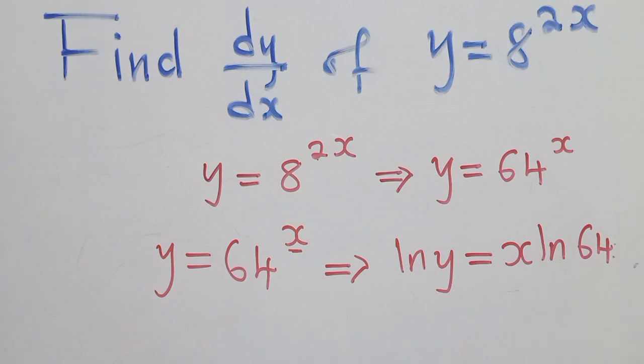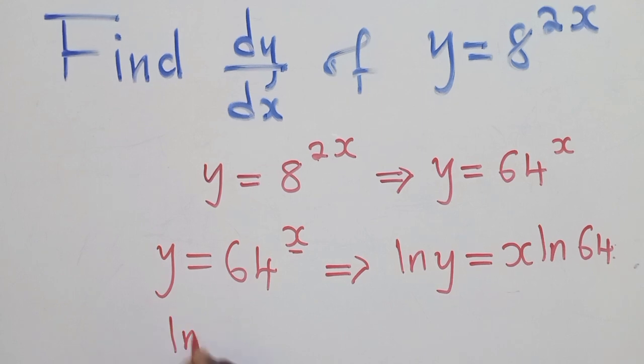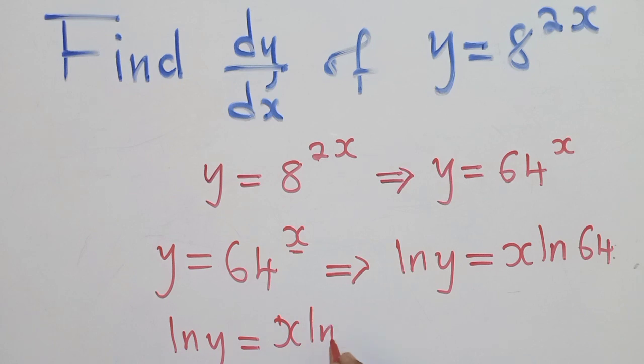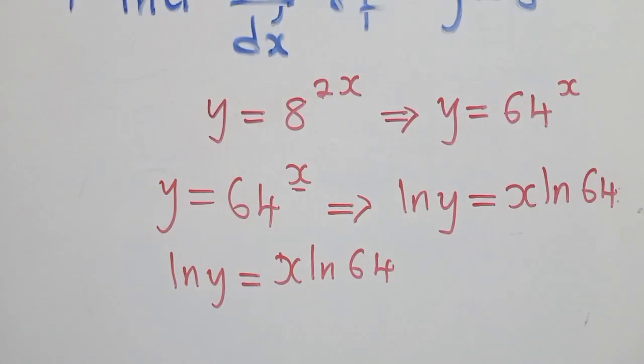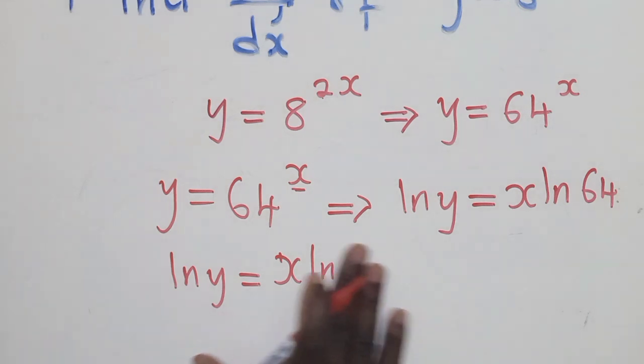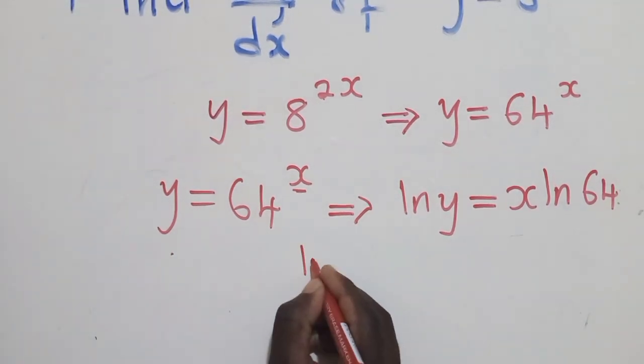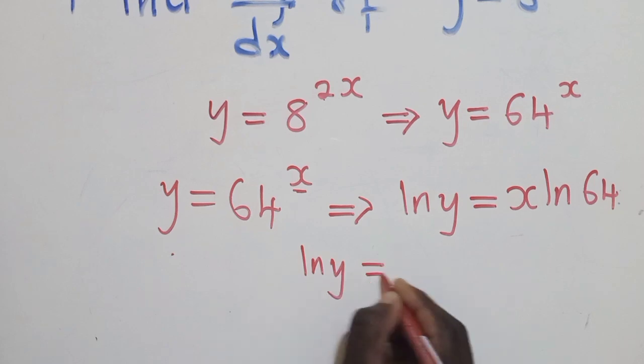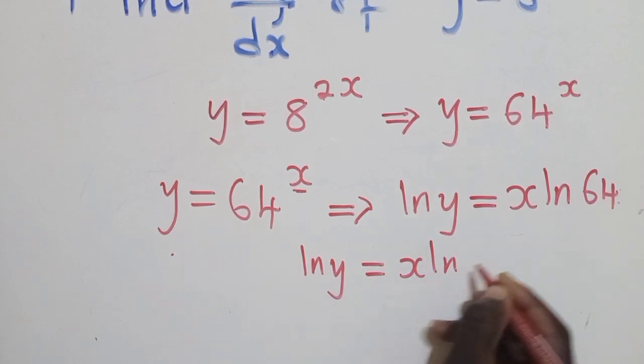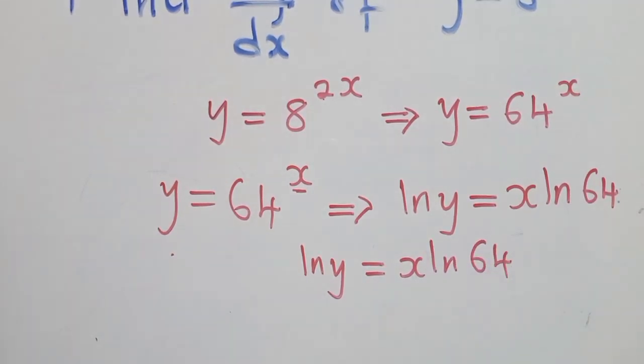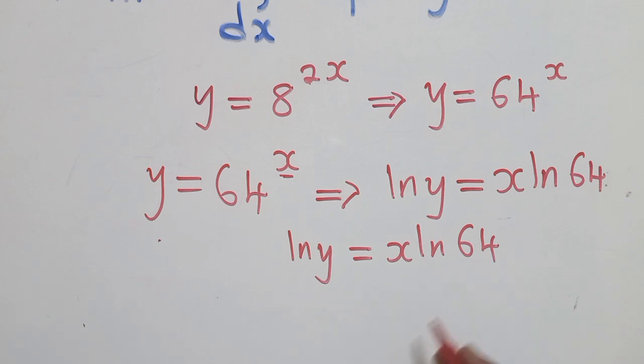Hopefully you can see what is happening. So now, upon doing this, let me copy. We have ln of y is equal to x ln of 64. So now, upon applying the ln, let me write it properly so that we see. ln y is equal to x ln 64. Therefore, we now differentiate implicitly.